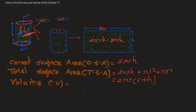This is how we calculate the total area of the cylinder. For the volume, the volume of a cylinder is always the area of the base times its height. The area of the base is a circle, which is πr², and the height is h. So the volume is πr²h. In this way we can find the curved surface area, total surface area, and volume of the cylinder.